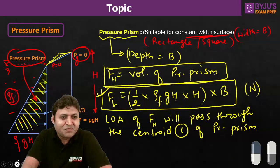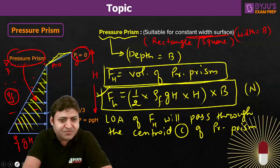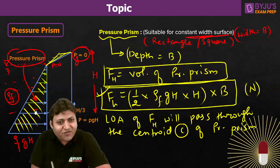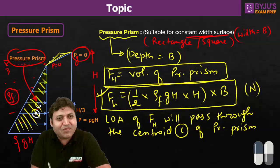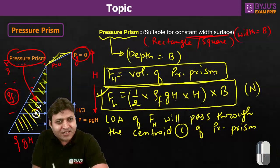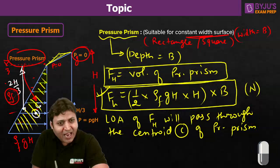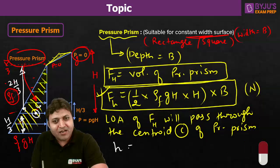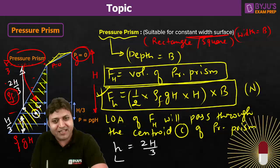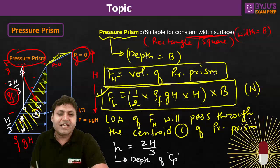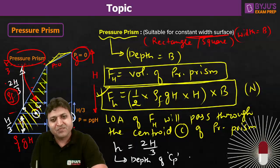The point of application passes through the centroid of the pressure prism. If the pressure prism is in the form of a triangle, the centroid C will be at a depth of 2H/3 from the free surface. From the bottom it will be H/3. The depth of centroid pressure from the free surface is 2H/3. The point P is where the hydrostatic force acts — that is the depth of the centre of pressure from the free surface.